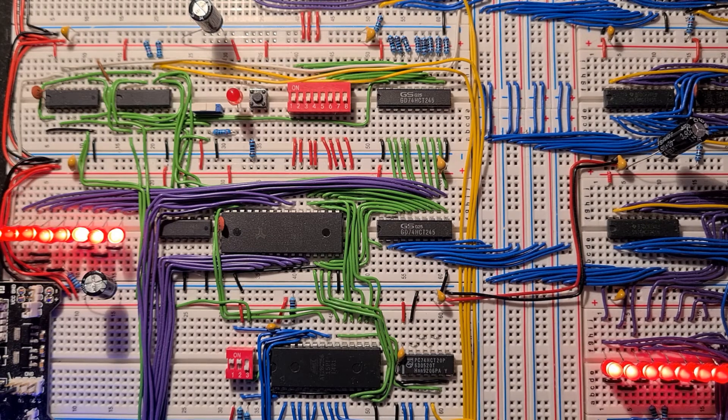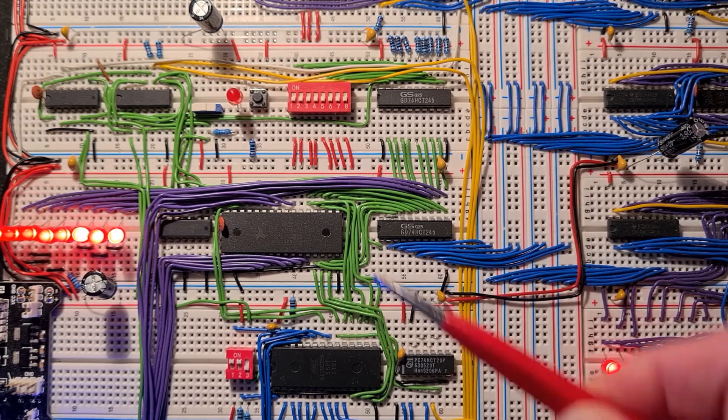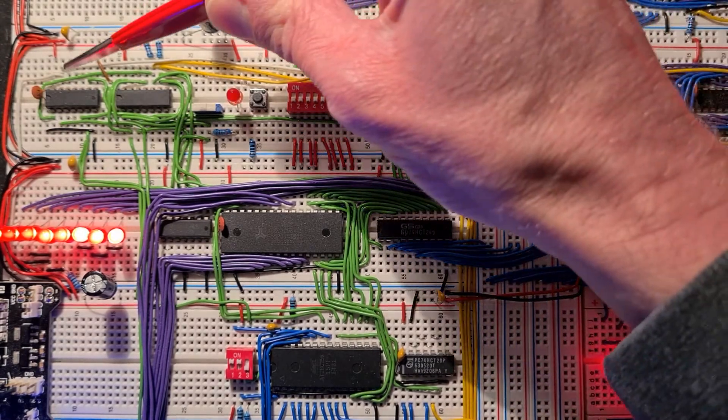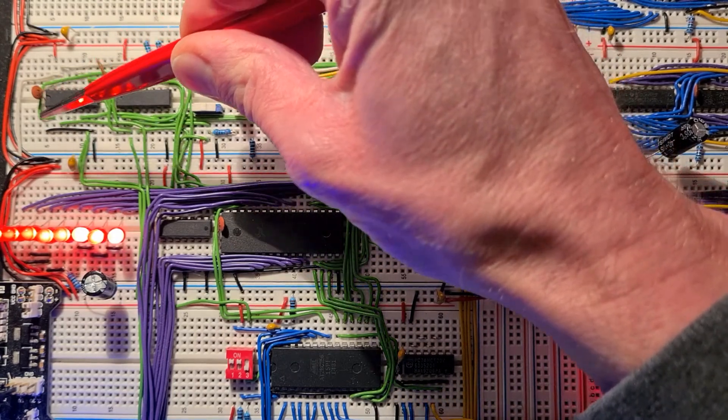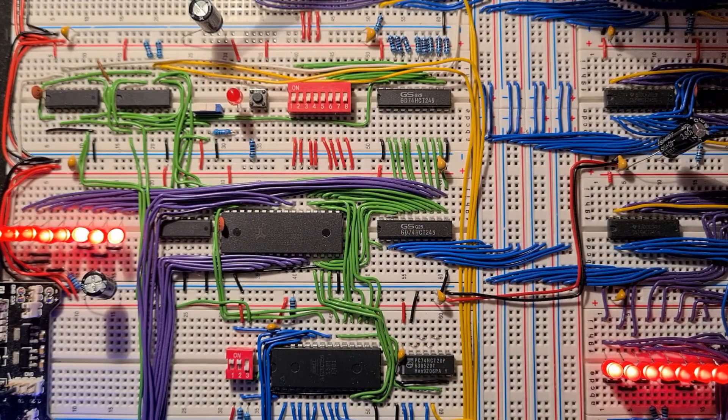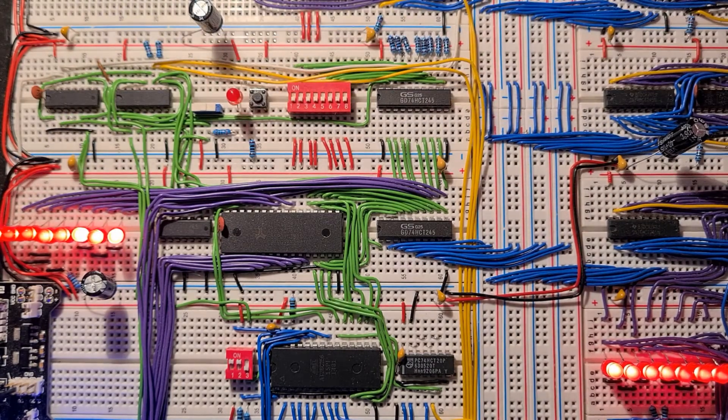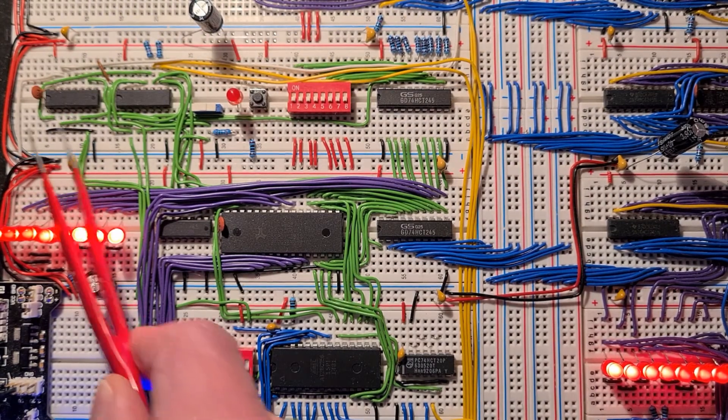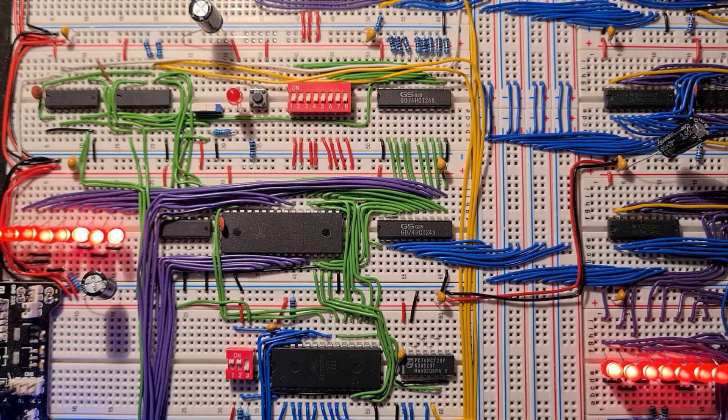And one thing I found out was that the clock line was very noisy. And to prevent that I added a 100 nanofarad capacitor to every chip that is connected to the clock line. And these are decoupling capacitors that have direct connection from the 5 volt to the ground line.